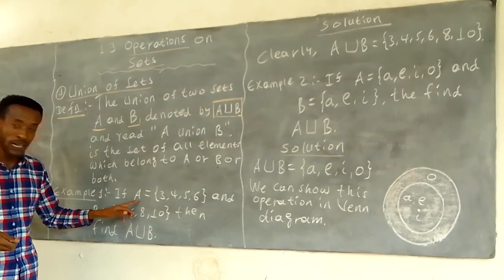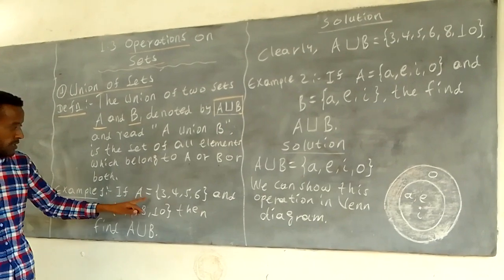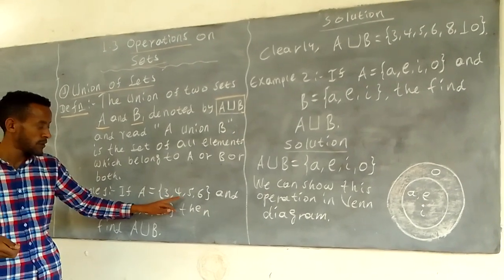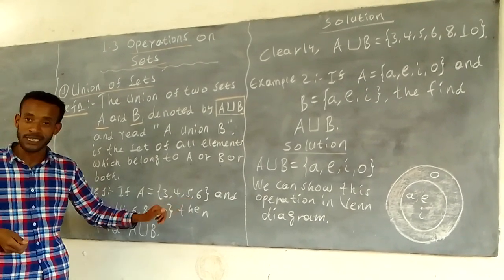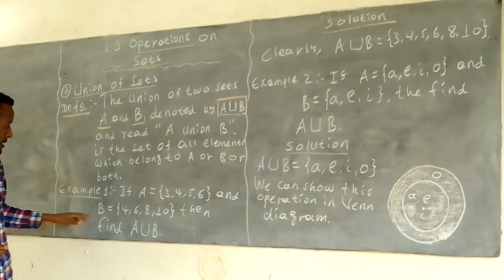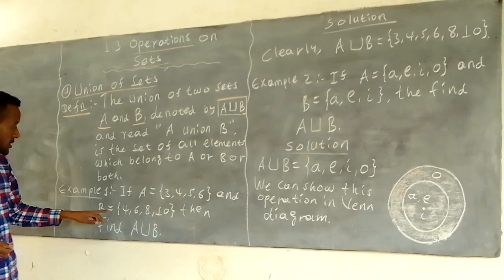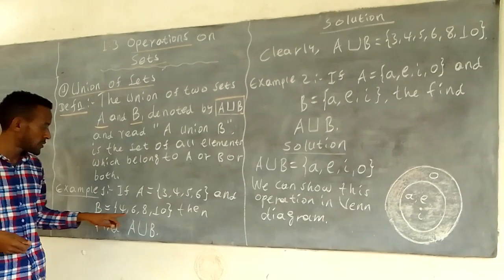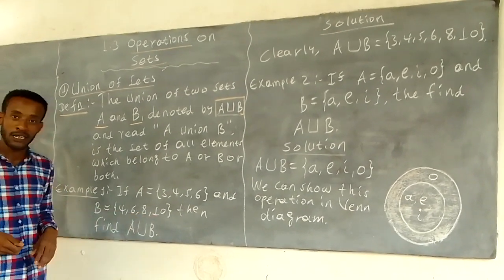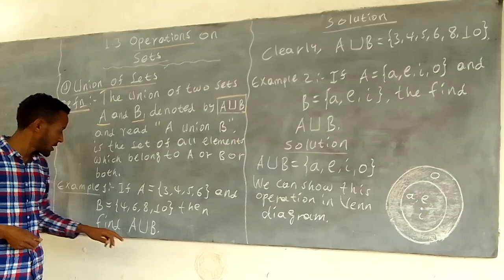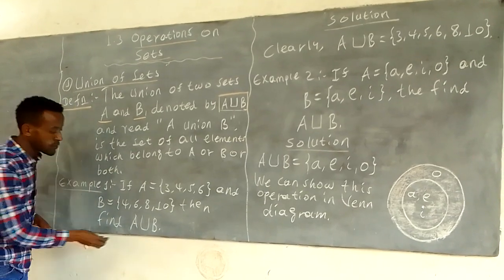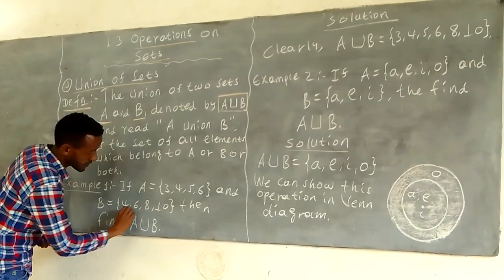If set A is equal to {3, 4, 5, 6} and set B is equal to {4, 6, 8, 10}, then find A union B.